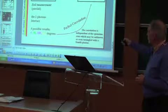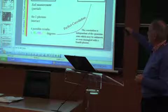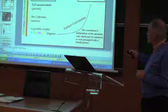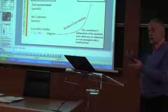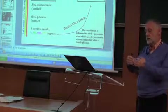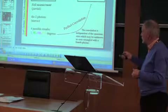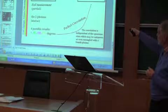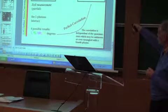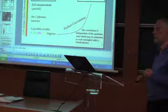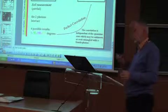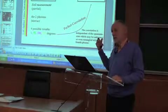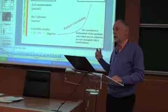Suppose there were a quantum cloning machine: you input a photon in whatever state, without knowing the state, and it comes out doubled. Instead of having a mixture of four polarization possibilities, you'd have a mixture of two copies in each direction. There are measurements that allow you to distinguish that state from the previous one. So if you had a quantum cloning machine, you could signal.